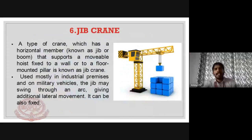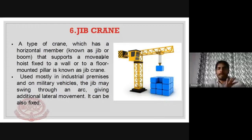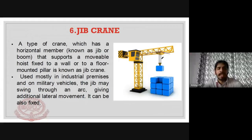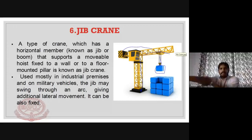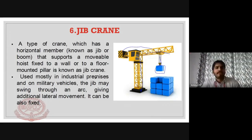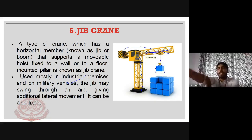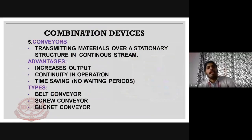A jib crane is a type of crane that has a horizontal member. It is a mobile hoist fixed to a wall, floor, or pillar. It can rotate through an arc, allowing material to be transported through a swing radius. They are used on industrial premises and for military vehicles.